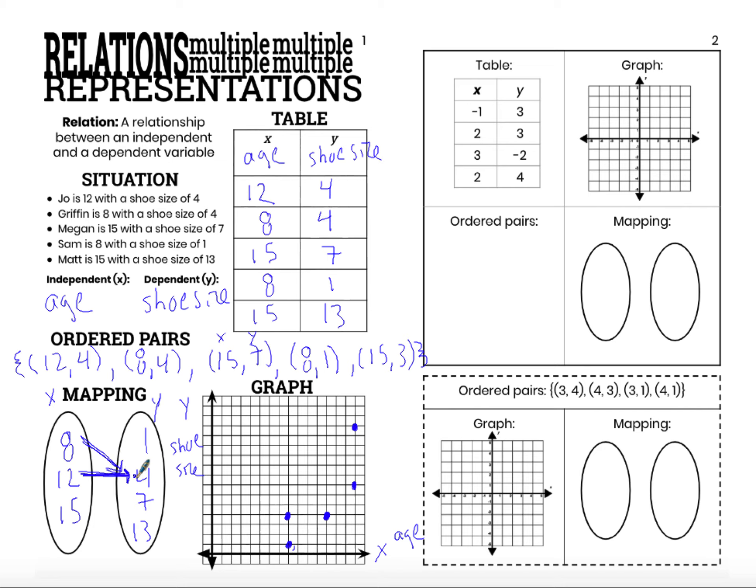Arrow from 8 to 4 represents Griffin. Griffin has an age that gives me a shoe size of 4. Megan, 15, shoe size of 7. That arrow represents Megan. Sam is 8 with a shoe size of 1. This arrow represents Sam, independent of 8, giving me a dependent of 1. And finally, Matt is this arrow going from 15 to 13. This arrow represents that Matt has a pairing of an age of 15, giving a dependent variable value of 13, shoe size of 13.